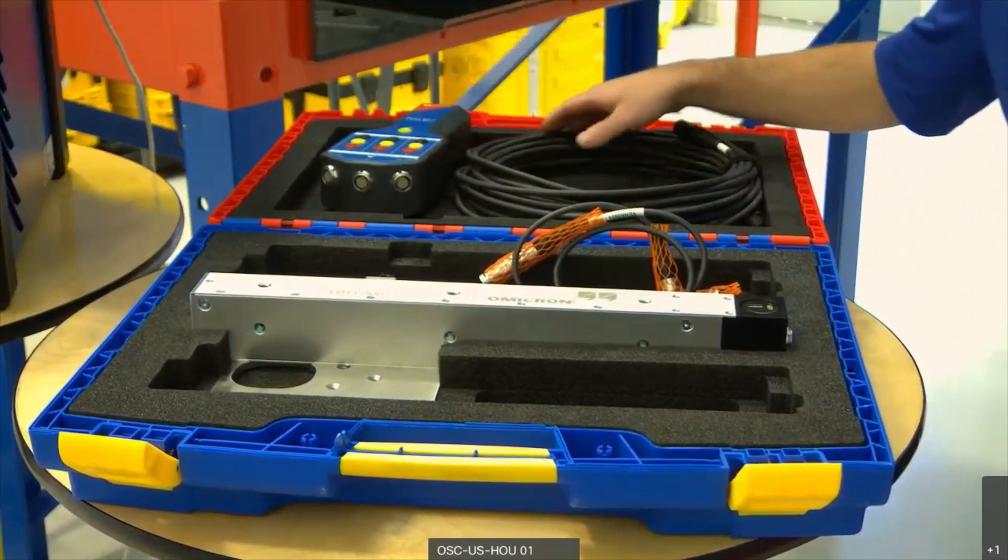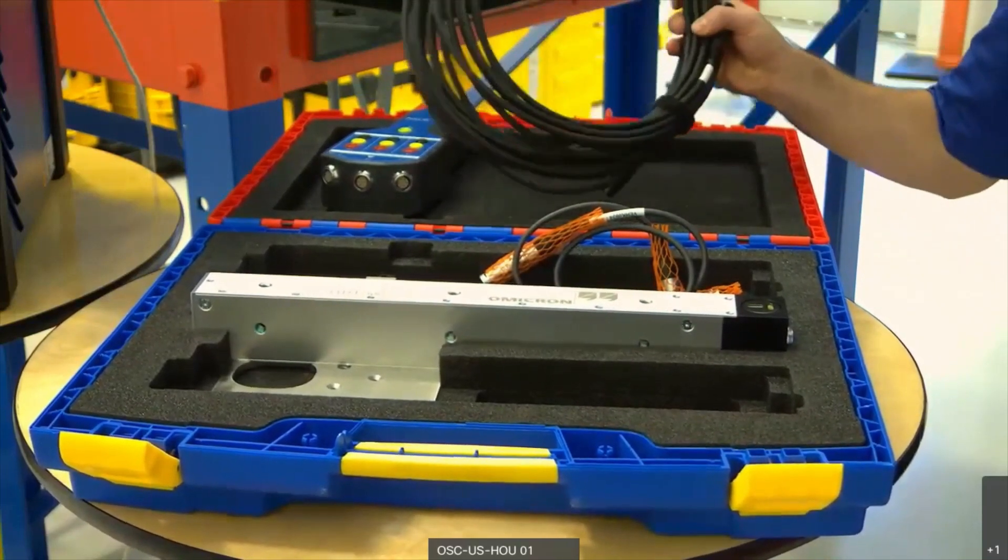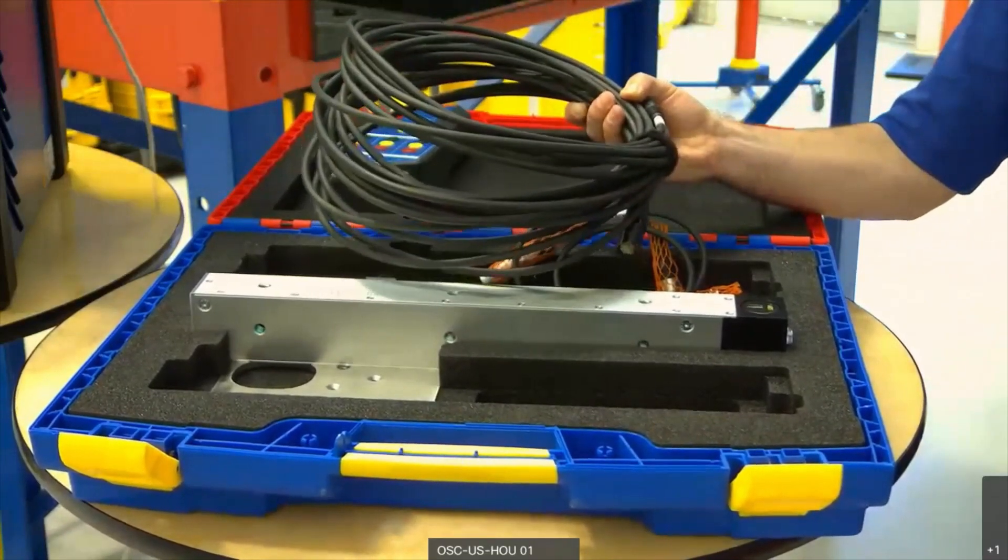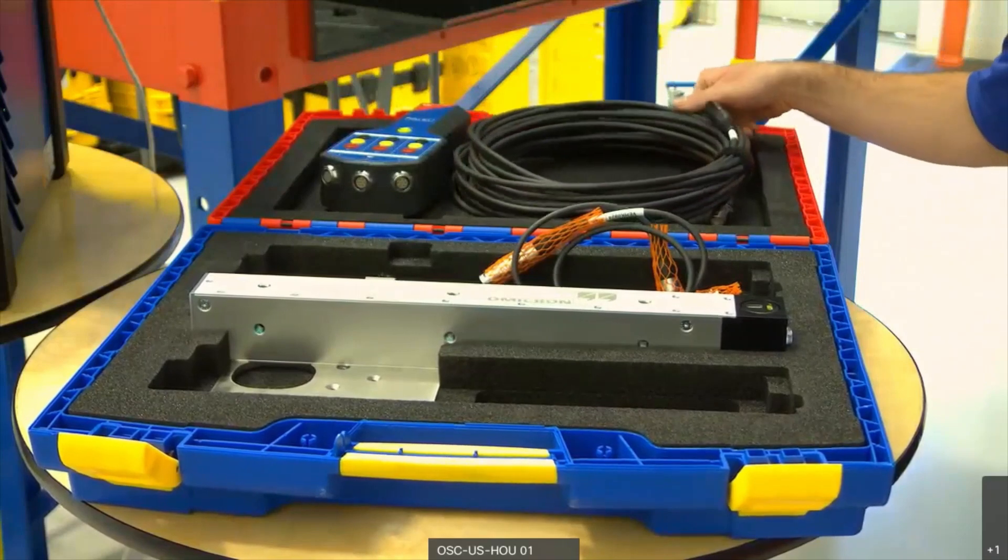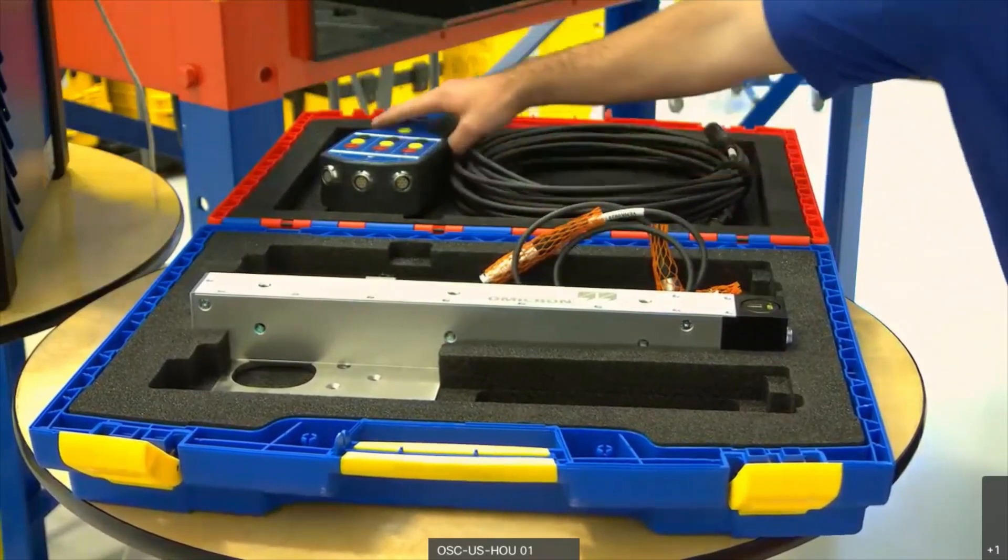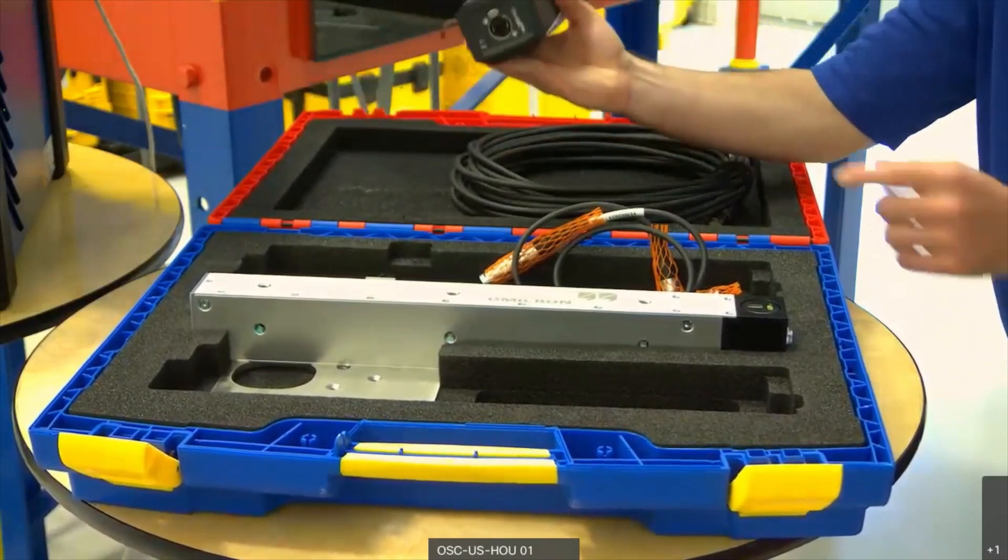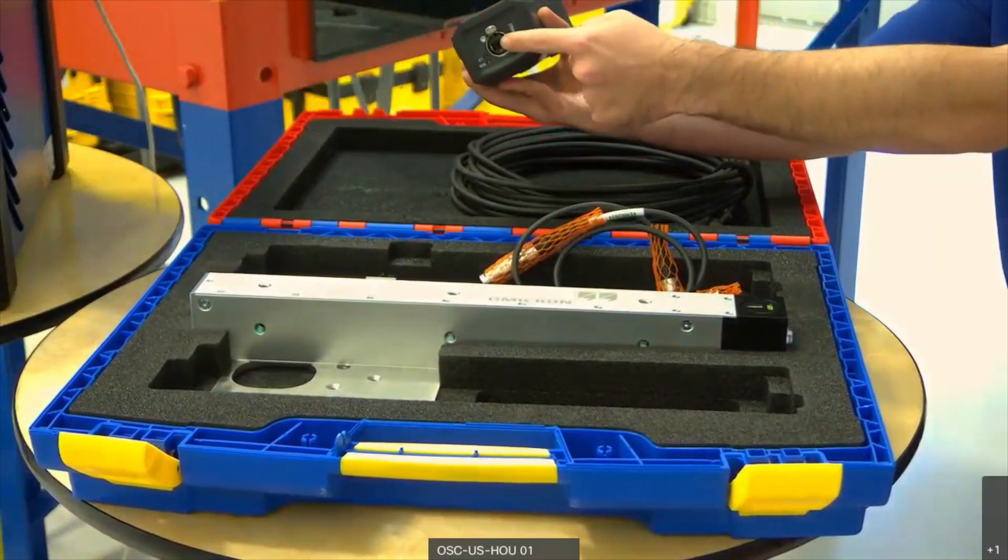To establish the connection between the TN3 and our laptop, we will use this cable called the EtherCAT. This provides power and data communication to the TN3. We can find the connection point for the EtherCAT cable at the bottom of the TN3 device.